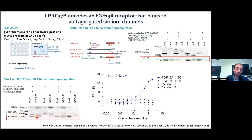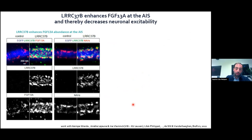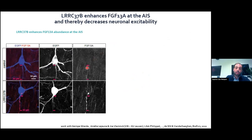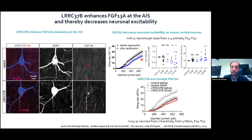FGF13A also directly binds the voltage-gated sodium channel at the axon initial segment. So we have a model in which LRC37B binds FGF13A, which also binds the voltage-gated sodium channel. In mouse neurons overexpressing LRC37B, staining for NAV channels, LRC37B, and FGF13A shows they are all concentrated together at the axon initial segment. FGF13A, an AIS protein in mouse, is enriched in LRC37B-expressing neurons. Applying FGF13A on mouse cortical sections decreases their excitability, recapitulating the gain-of-function effect of LRC37B. So LRC37B concentrates FGF13A, which decreases neuronal excitability.